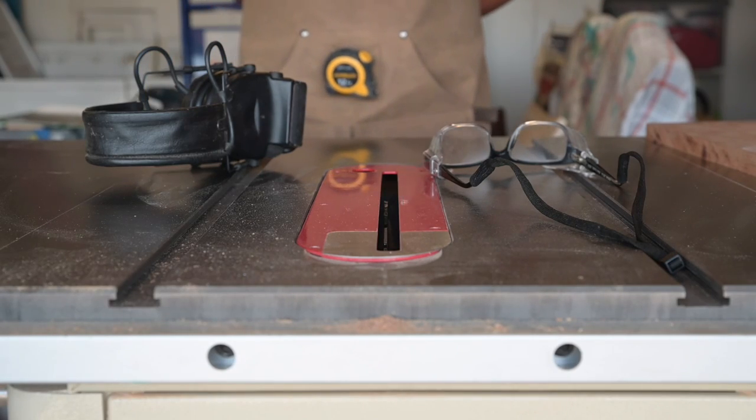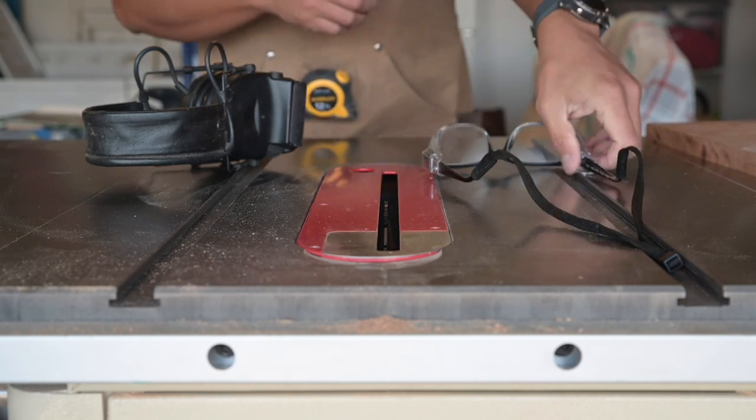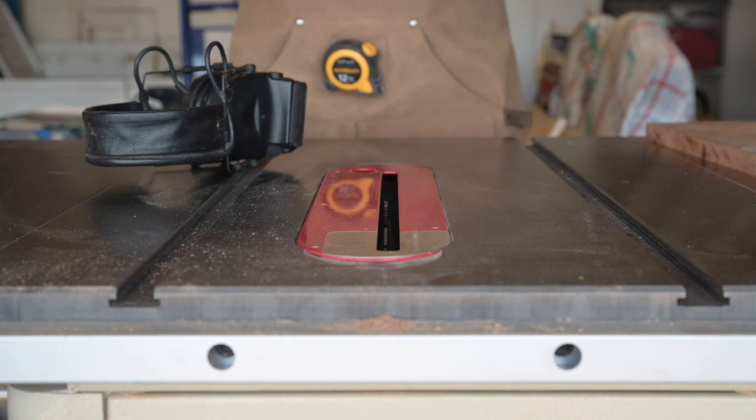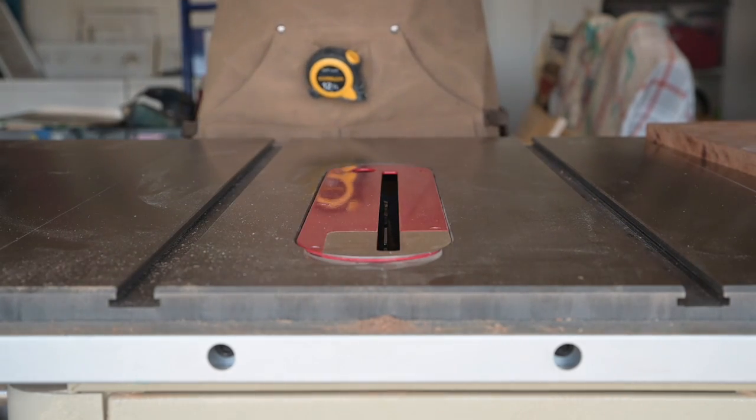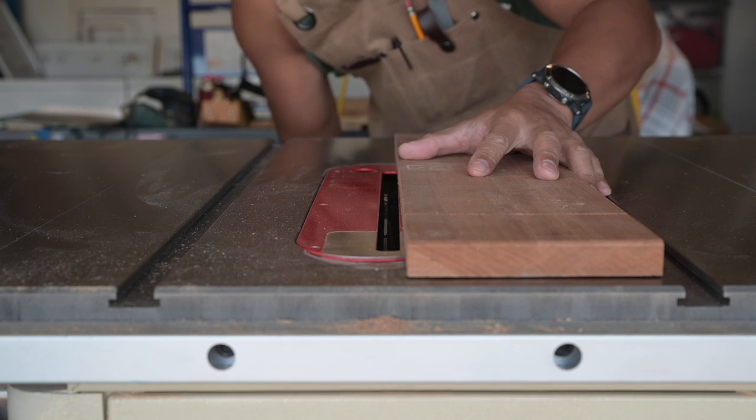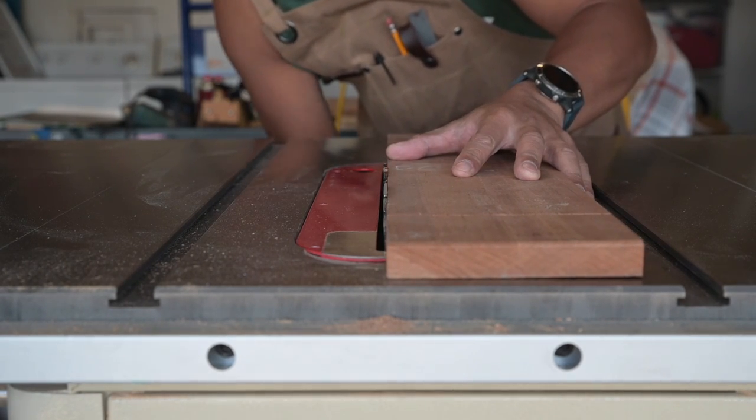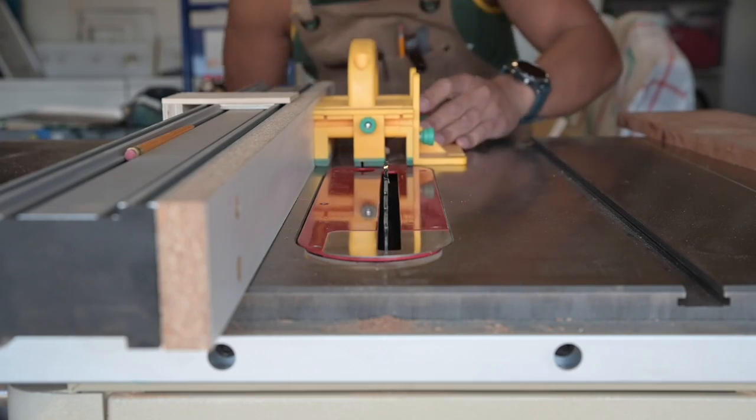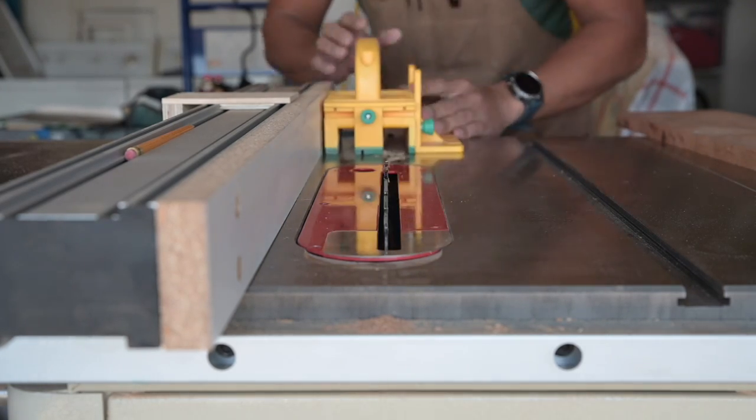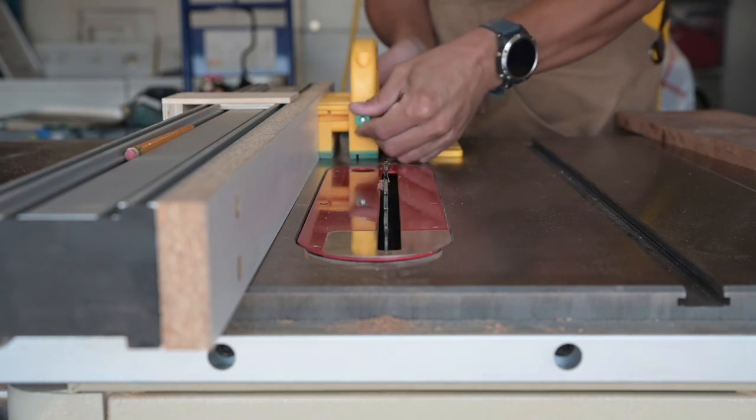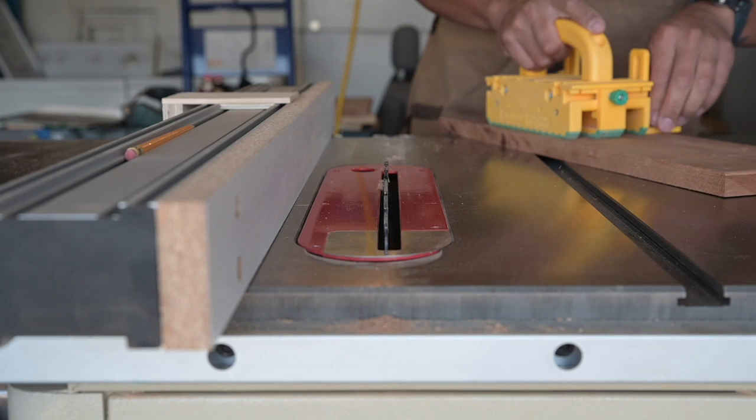First let's get some safety gear on and keep all the gross sawdust off your body. That's always good and here we go. Gonna get started here by ripping down a few boards to the width of about an inch and a half wide. That's what I like.